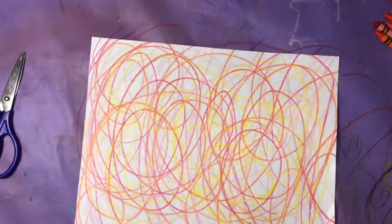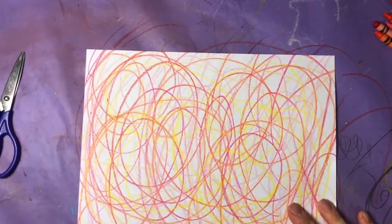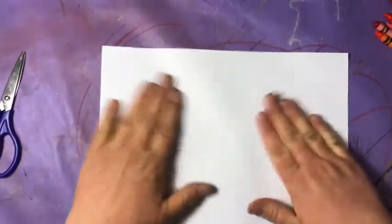Okay, so I've covered my white paper with some warm colored scribbles. I'm going to set that aside for a second and take a second piece of white paper. This is going to be our base.